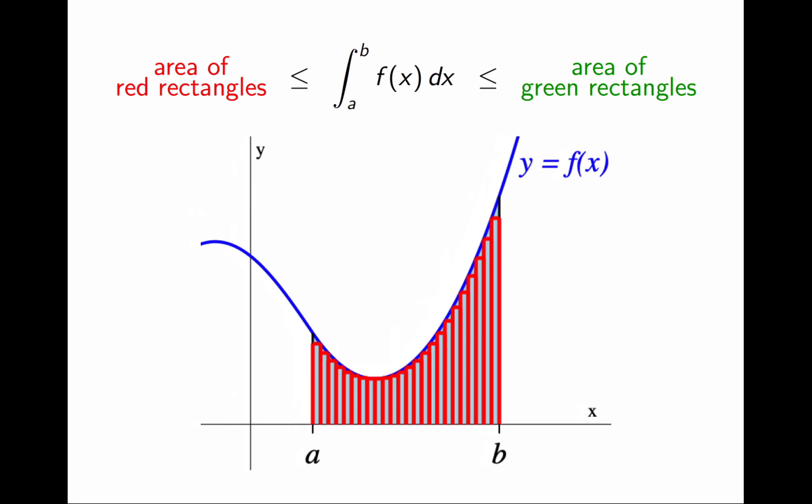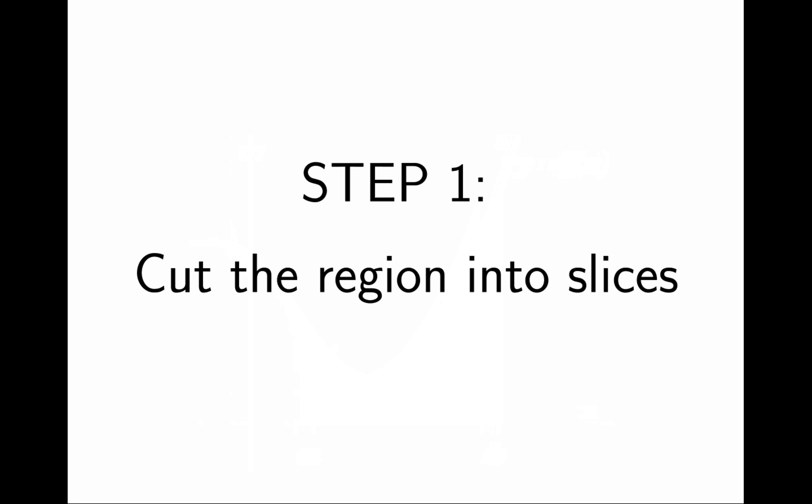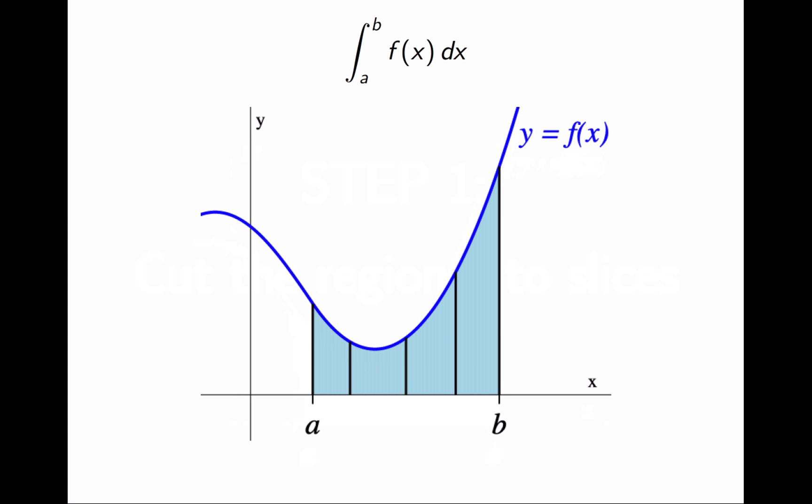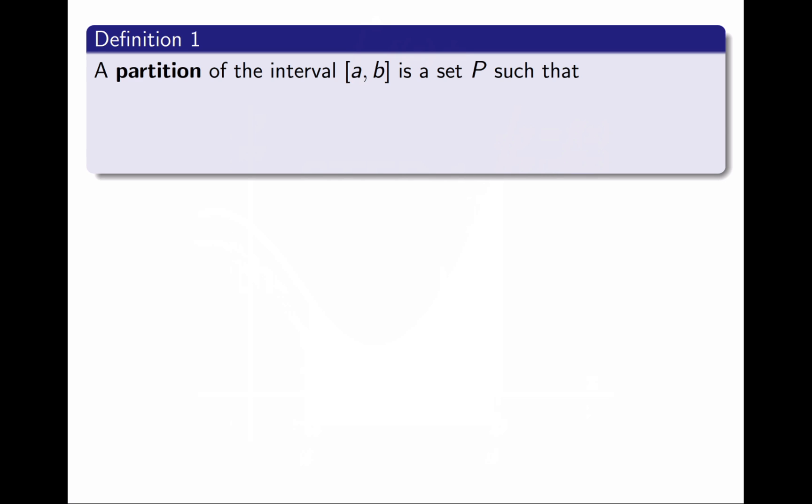Now to formalize it. Step 1: Cut the region into slices. I will divide the interval into subintervals, and then use those subintervals to cut the region into slices. Here's a new definition. A partition of the interval [a,b] is a set P that is finite, that is contained in the interval, and that contains both endpoints. In other words, P consists of the endpoints of the interval, plus a few other points from the interval.